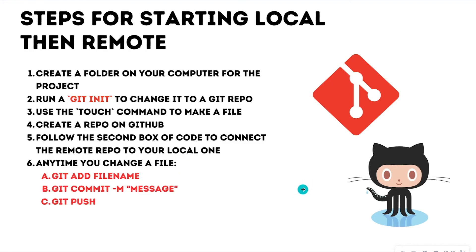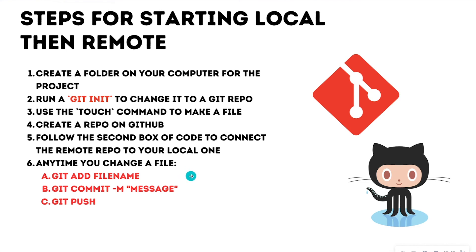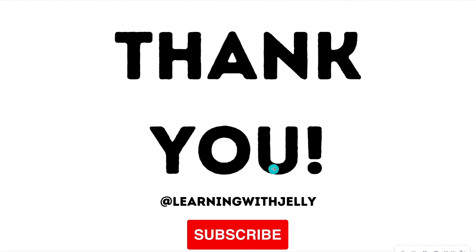Here are the steps to remind you for starting local then remote — you can definitely do remote first then local too. You want to create a folder on your computer, initialize it as a git repo using git init, and use the touch command to make any file you want — a markdown file, a text file, or a coding file. You then want to create that repo on GitHub, follow the second box of code to connect the repo to your local one, and then make sure you know: git add, git commit, git push. Git commit will always have a descriptive message of what you are changing.